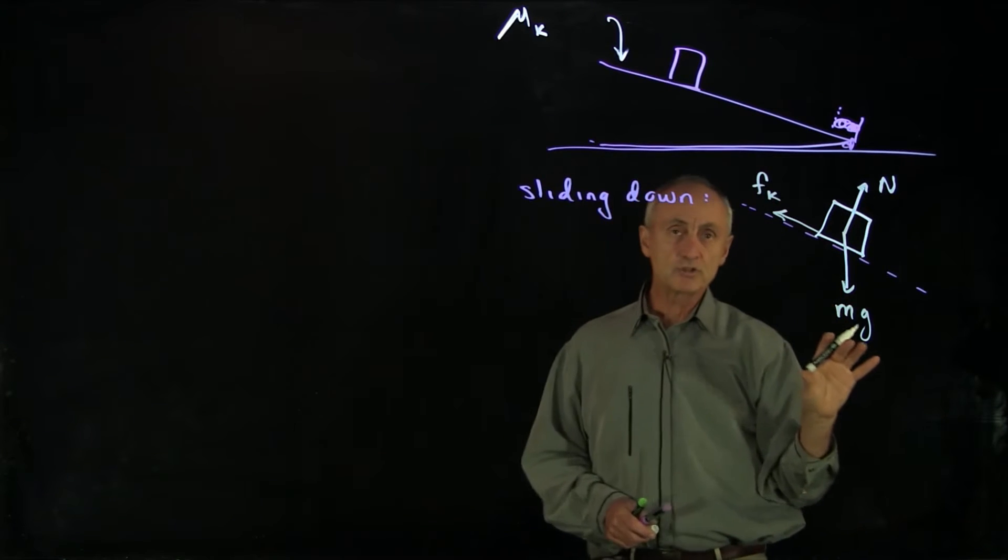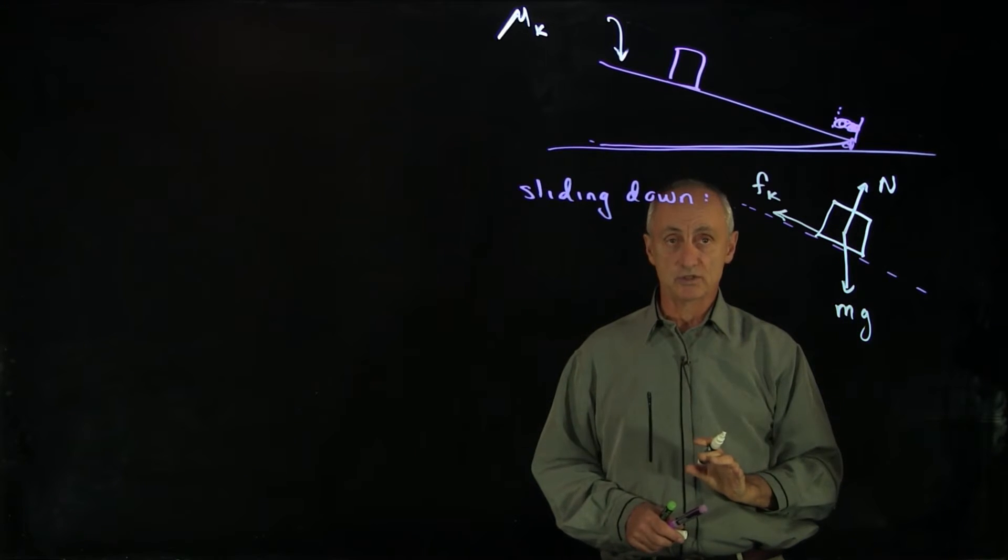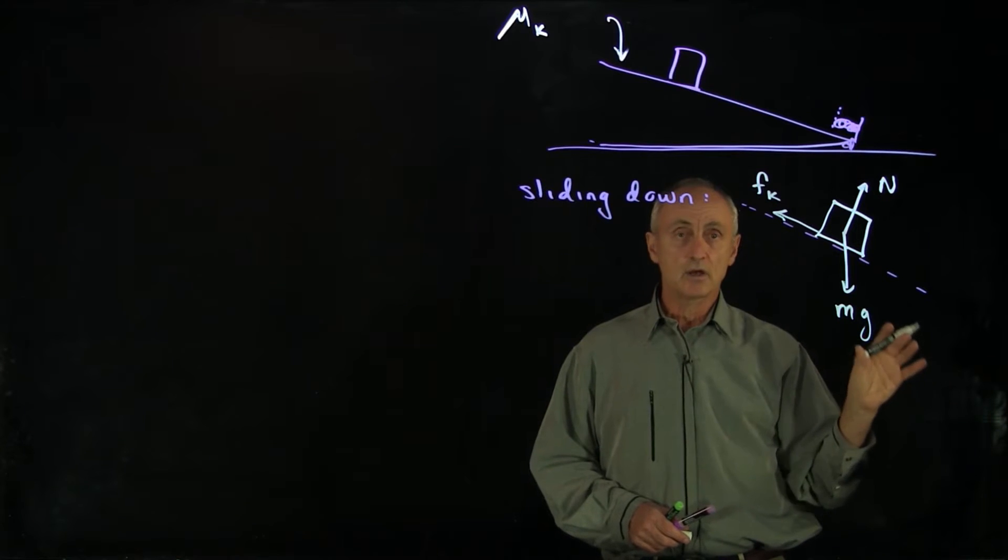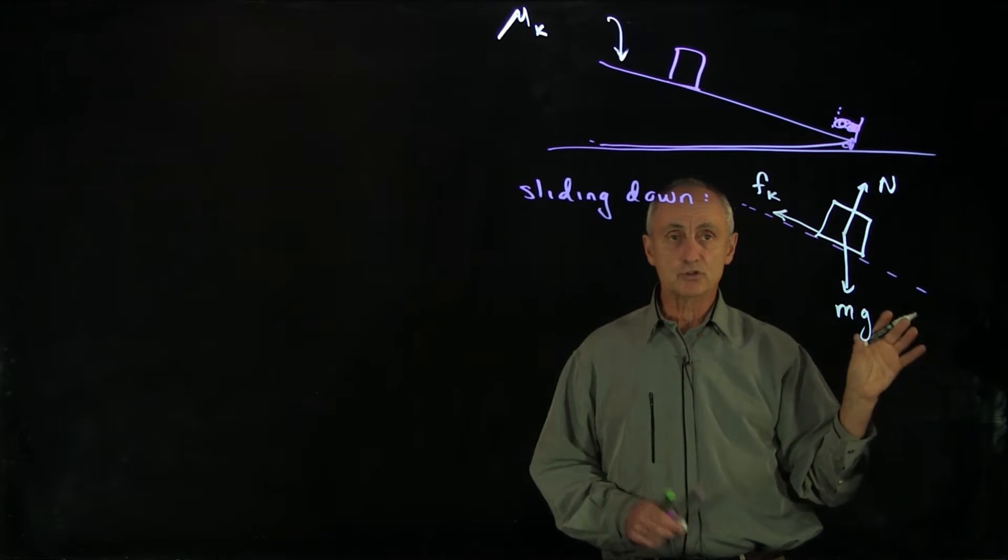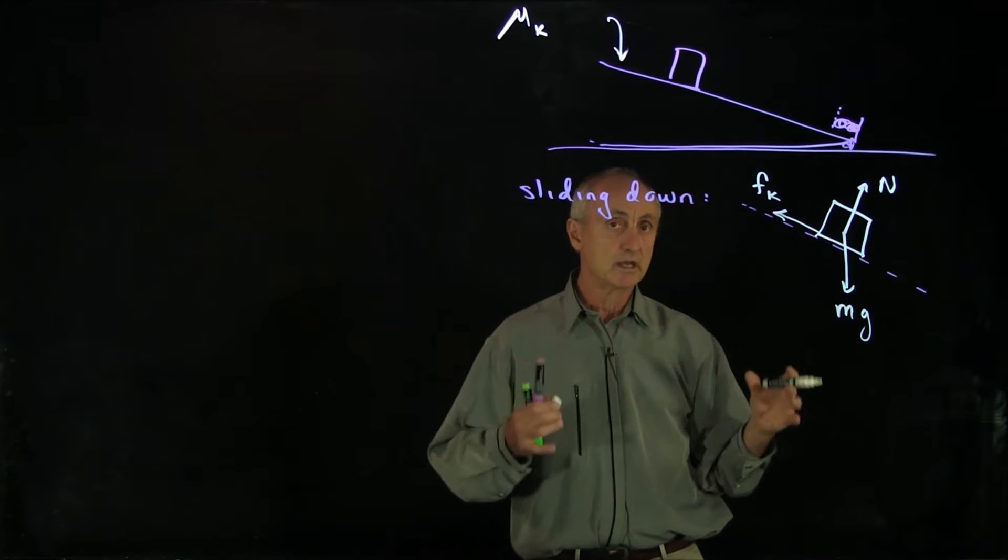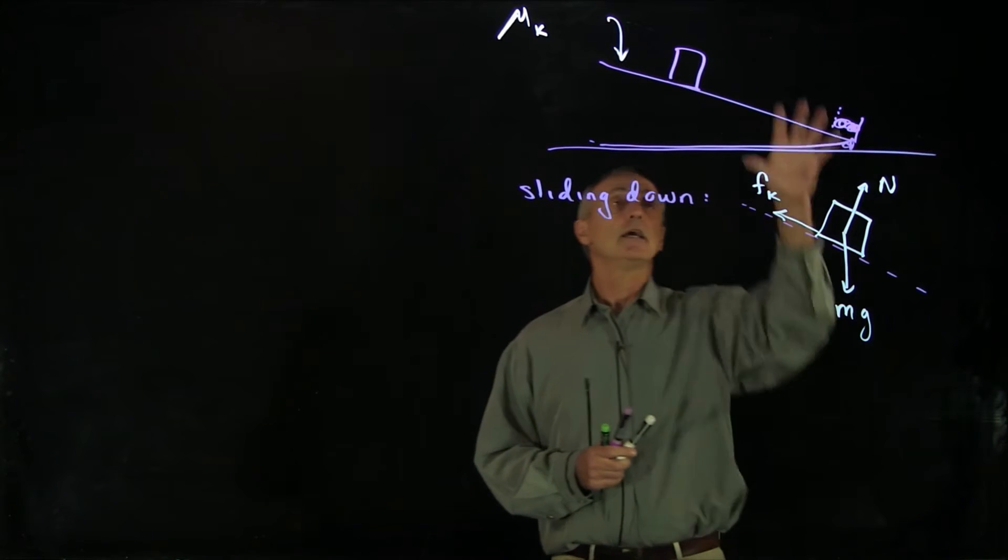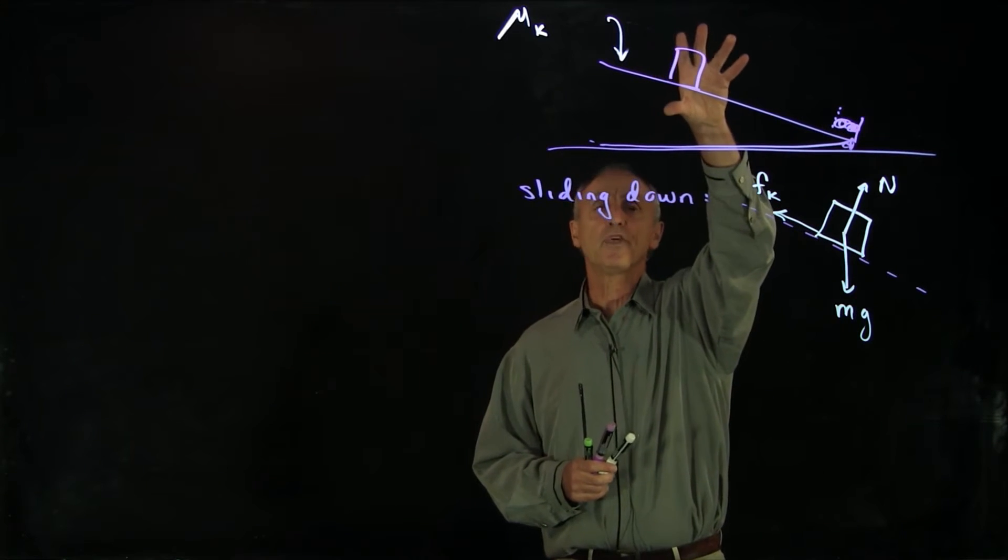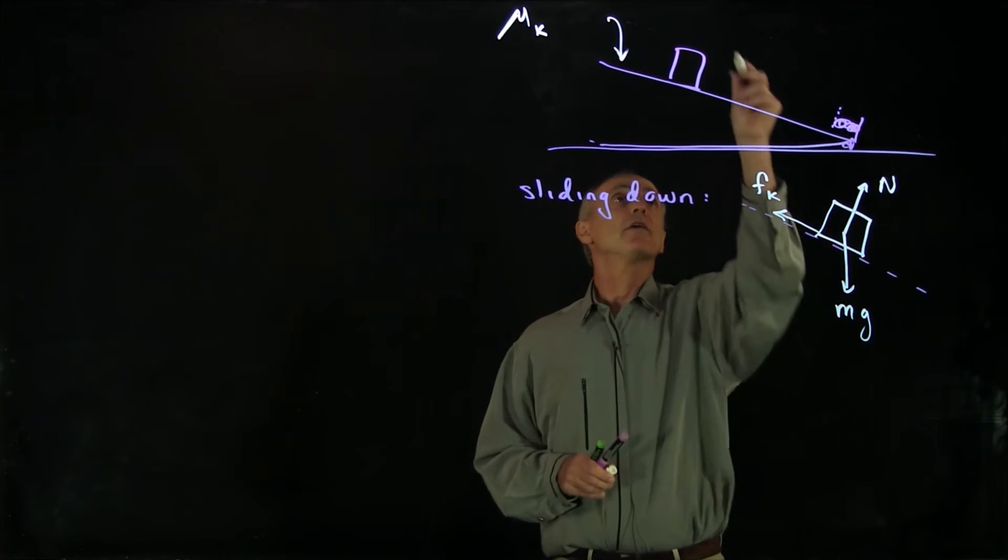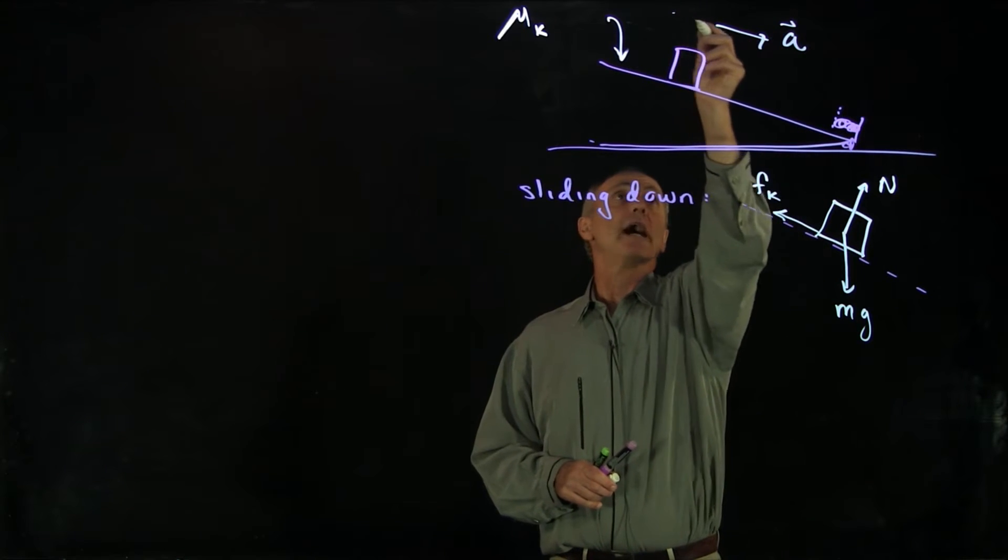When you have a free body force diagram, we have to decide how we should choose our coordinate systems. What we want to encourage you is not to choose a coordinate system with unit vectors horizontal and vertical just because that's the way one always does it, but to use the constraints of the system to help you choose the coordinate system. A technique for doing that is to draw what you think will be the acceleration on your sketch.